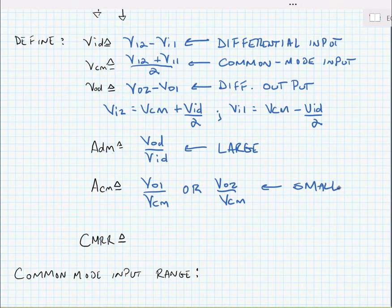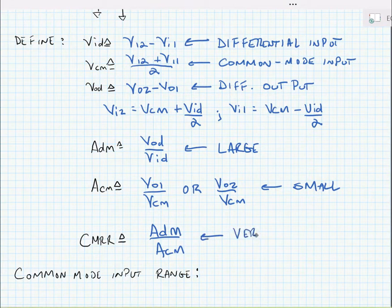Finally, we look at the common mode rejection ratio, which is how well the signal amplifies differential signals and rejects common mode signals. This is equal to ADM over ACM. In other words, the differential mode gain divided by the common mode gain, and ideally, this is very large. What we mean by very large here is typically we want this to be 60 to 100 dBs or more.